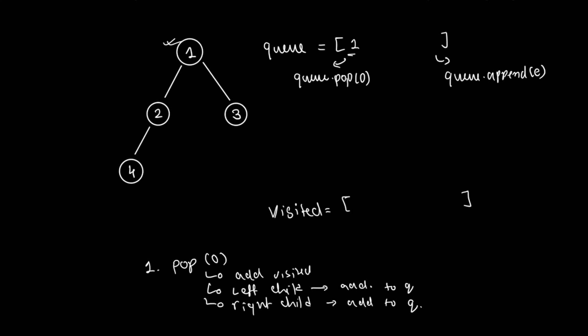So I pop the element — the popped element is root, which is one. Once I've popped it, I add it to visited. I check the left child — yes, I found it, and it's two, so I add it to the queue. I check the right child — yes, I found it, which is three, so I add it to the queue as well.